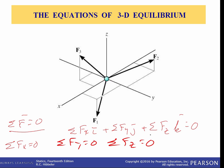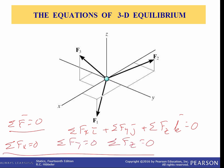Using these three equations we can solve for at most three unknowns. In 2D we can only solve for two unknowns, and in 3D we can solve for three unknowns because we have three equations. These unknowns are generally represented as coordinate direction angles or magnitudes of forces shown on the particle's free body diagram.